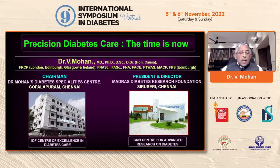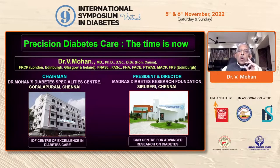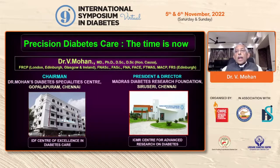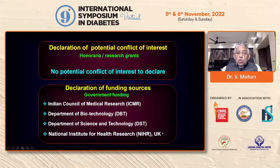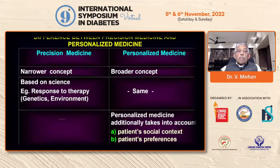About half an hour later, Dr. Ranjit Unnikrishnan is also going to talk about monogenic diabetes. There can be some overlap between these two, but his will be mostly a clinical talk about how to diagnose monogenic diabetes. Mine is a little bit more broad. I don't have any conflict of interest to declare. The studies are supported mainly by ICMR, but also some by DBT-DST and by the National Institute of Health Research, NIHR, in the UK.